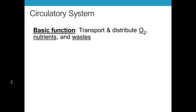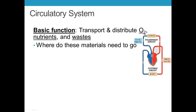The basic function is transportation and distribution. Oxygen, nutrients, and waste products need to be moved around the body and delivered to different places, so it's a delivery system. Where does this stuff need to go? It needs to go to your cells. You've got a hundred trillion cells, so that's a pretty extensive delivery system that your body has.